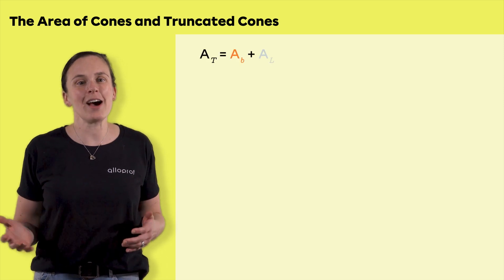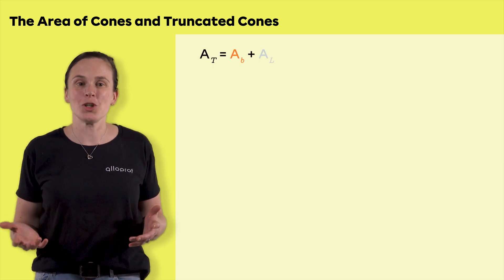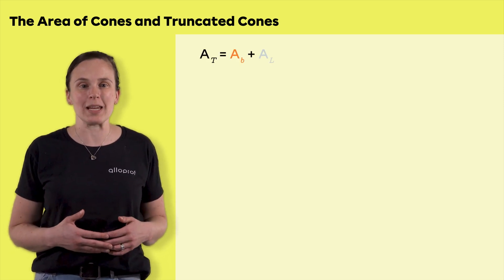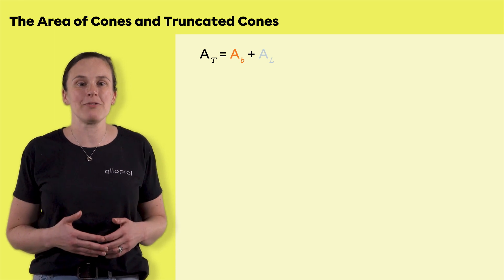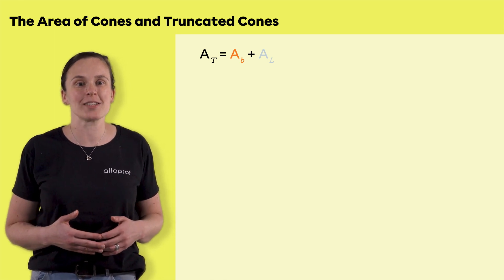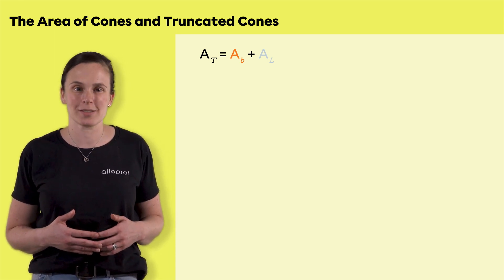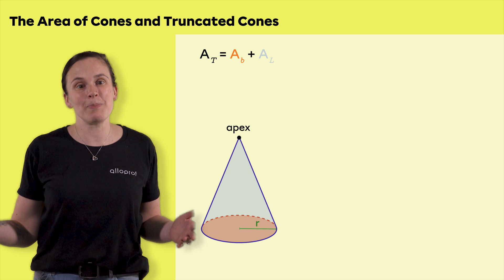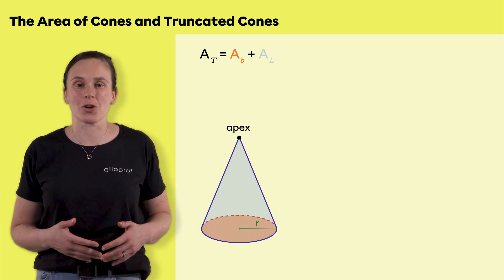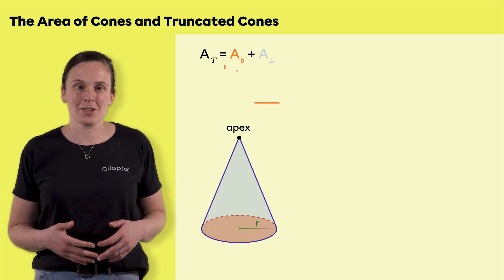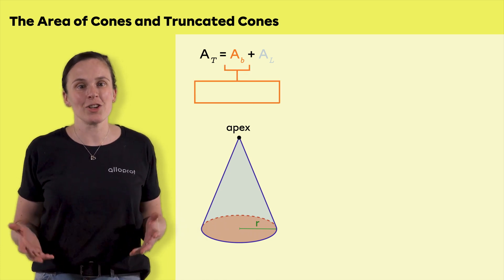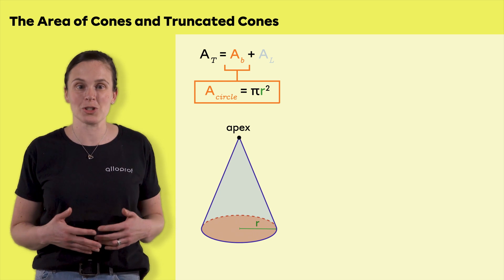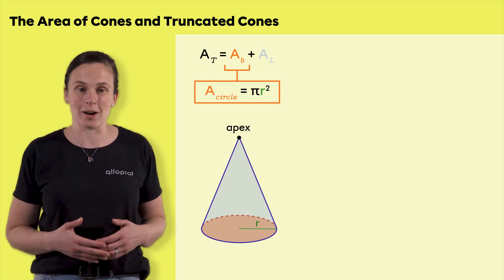The area of a base, usually denoted A subscript B, is the area occupied by the figure serving as the cone's base. In a cone, the base is always a circle. To find its area, you have to use the formula for the area of a circle, which is pi r squared.